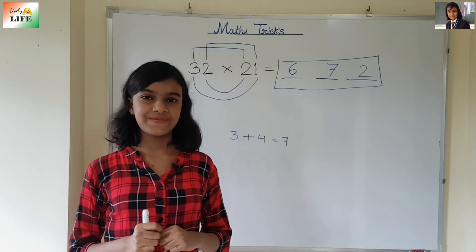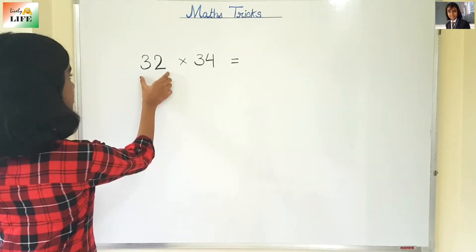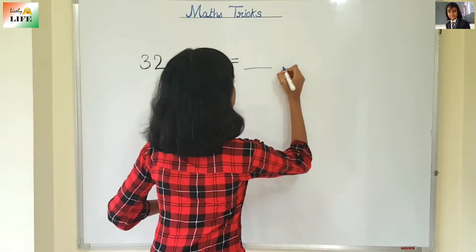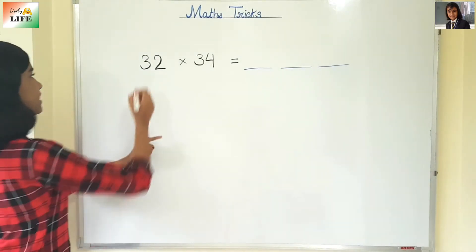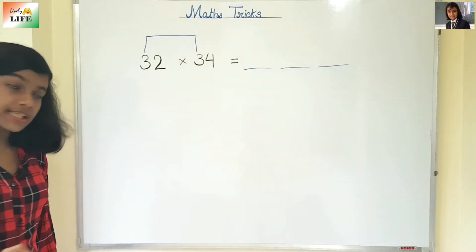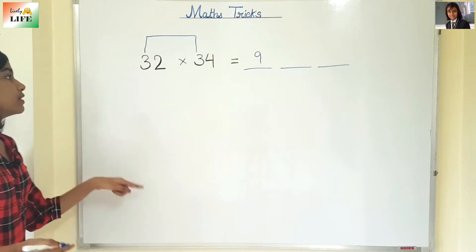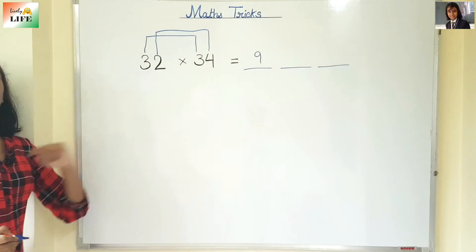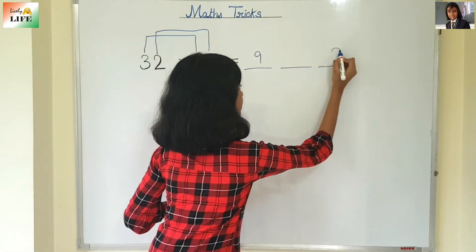Now let's solve another question — 32 into 34. With the same process we are going to do. First, 3 dashes. Then 3 into 3 — 3 into 3 is 9. The first dash is 9. Then the second digits: 2 into 4 is 8. We are not going to write 8 in the middle — we are going to write 8 in the last dash.